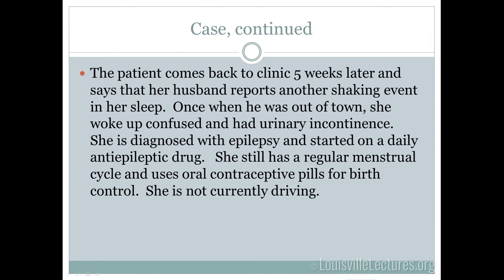The patient comes back to clinic five weeks later. Her husband says she had another seizure in her sleep, and once when he was out of town she woke up confused and had gone to the bathroom on herself. She's now had about three seizures, so by definition she has epilepsy. At this point you would want to start a medication. She's 38, still having a regular menstrual cycle, uses birth control pills, and is not driving.